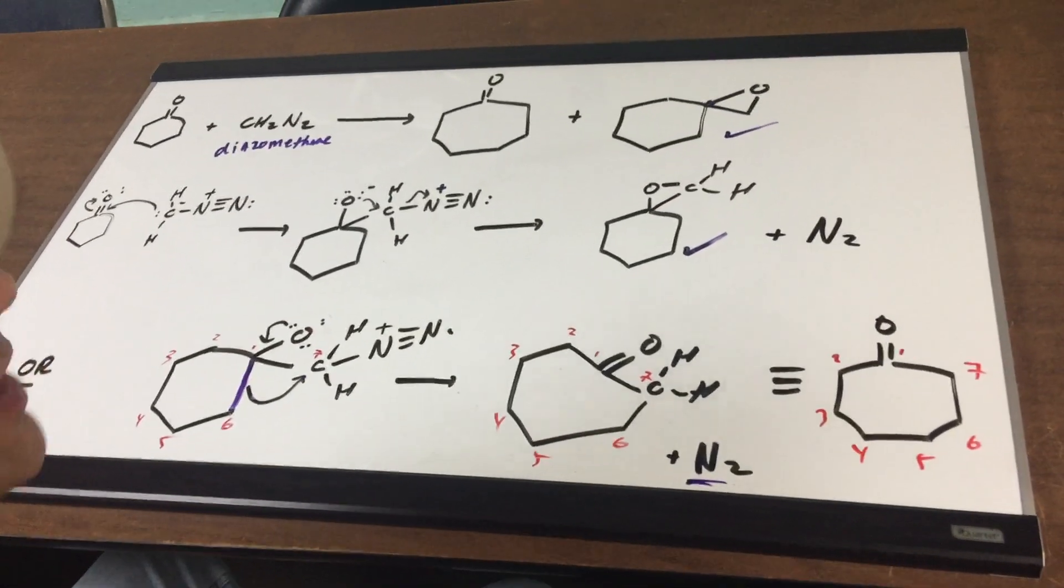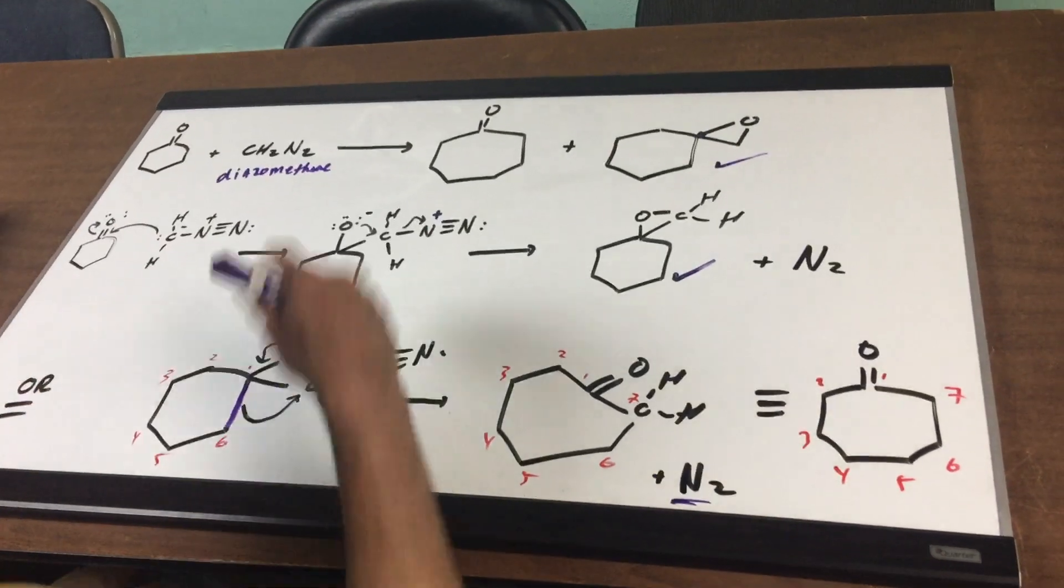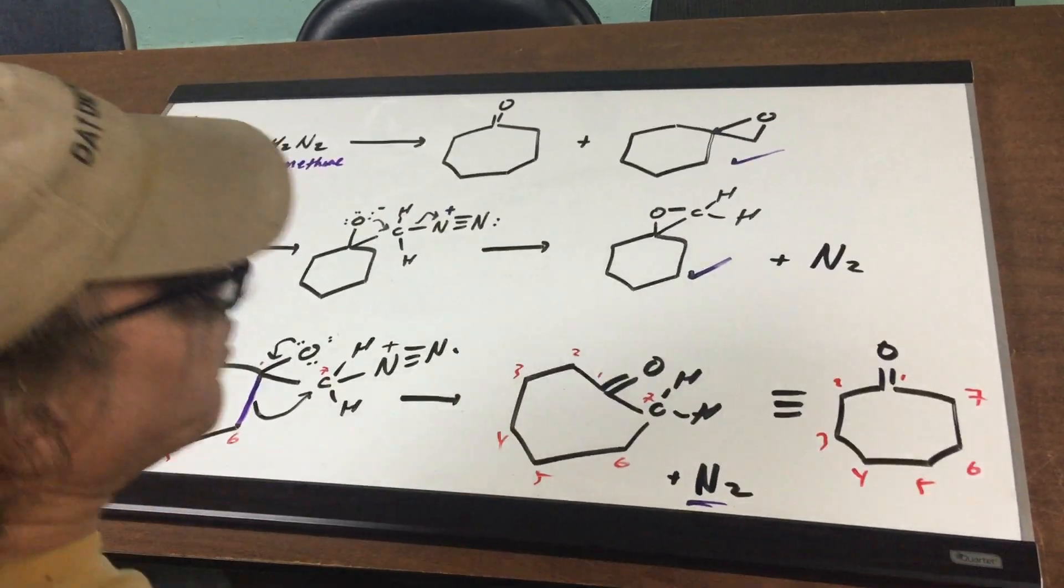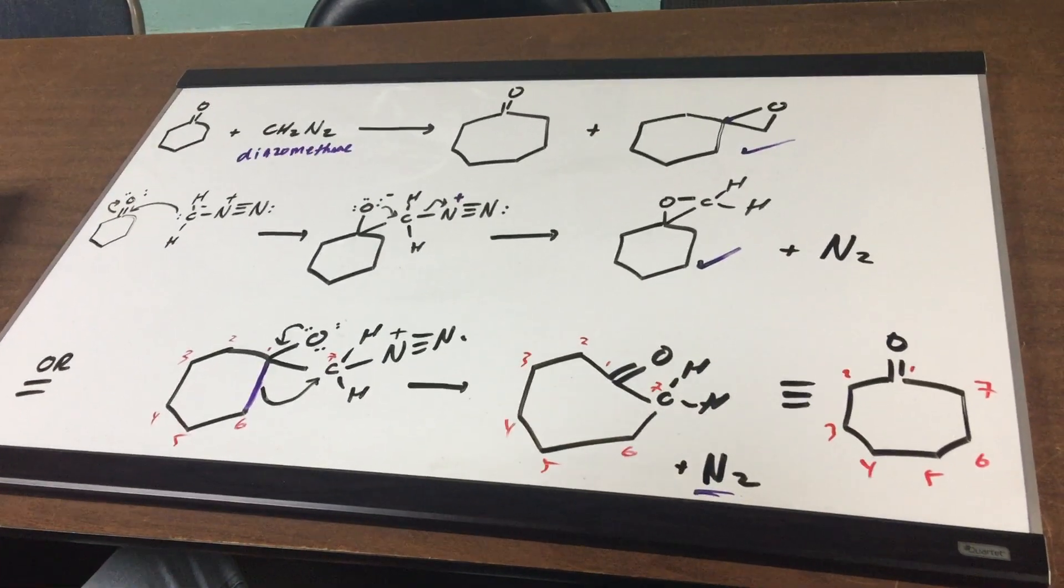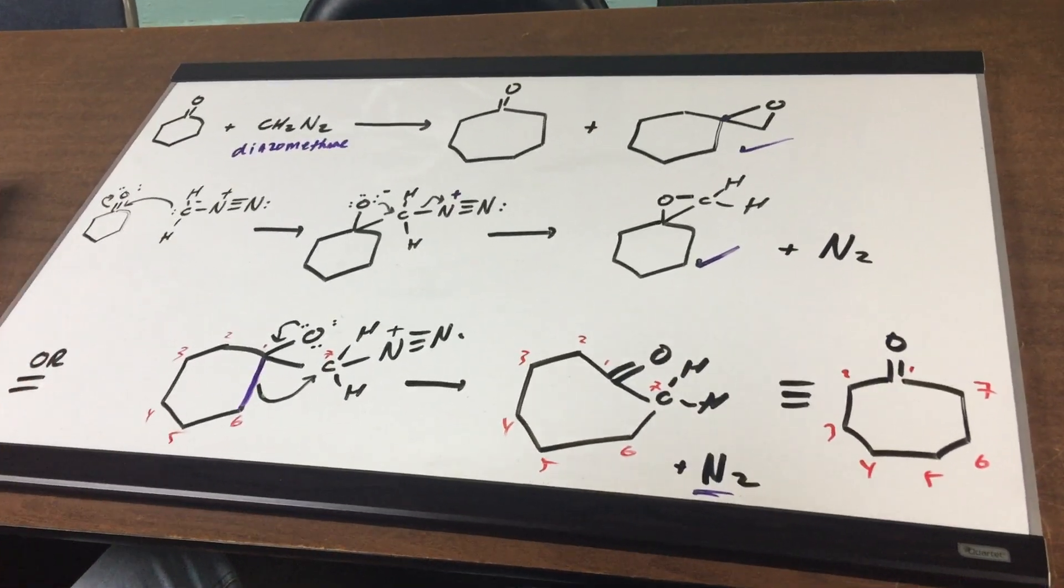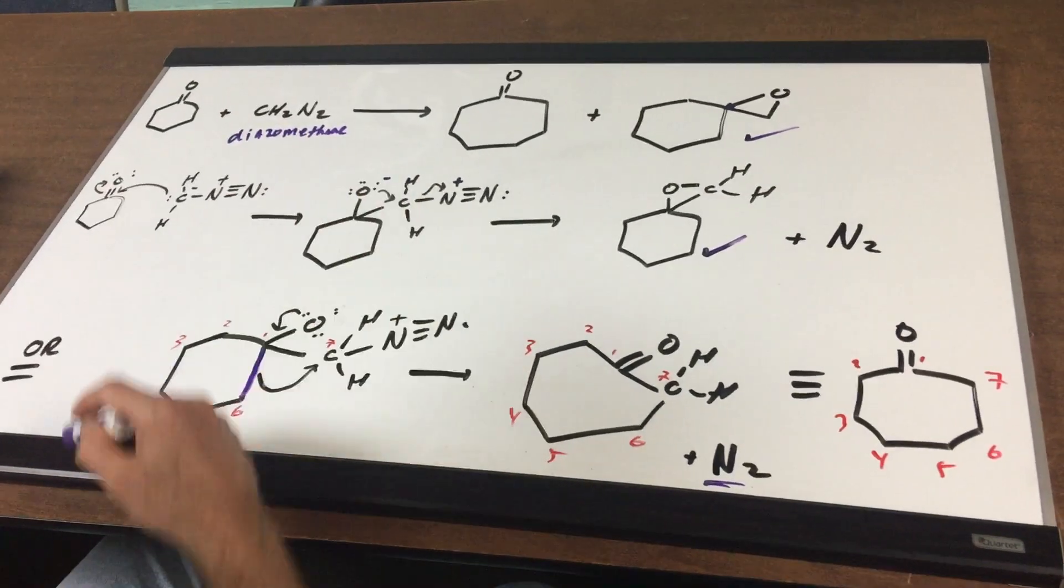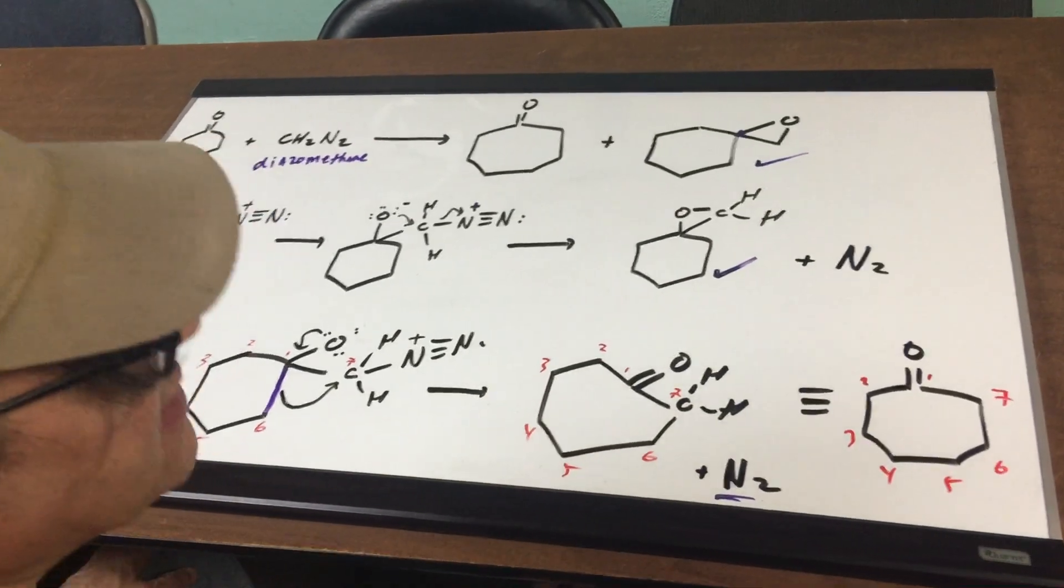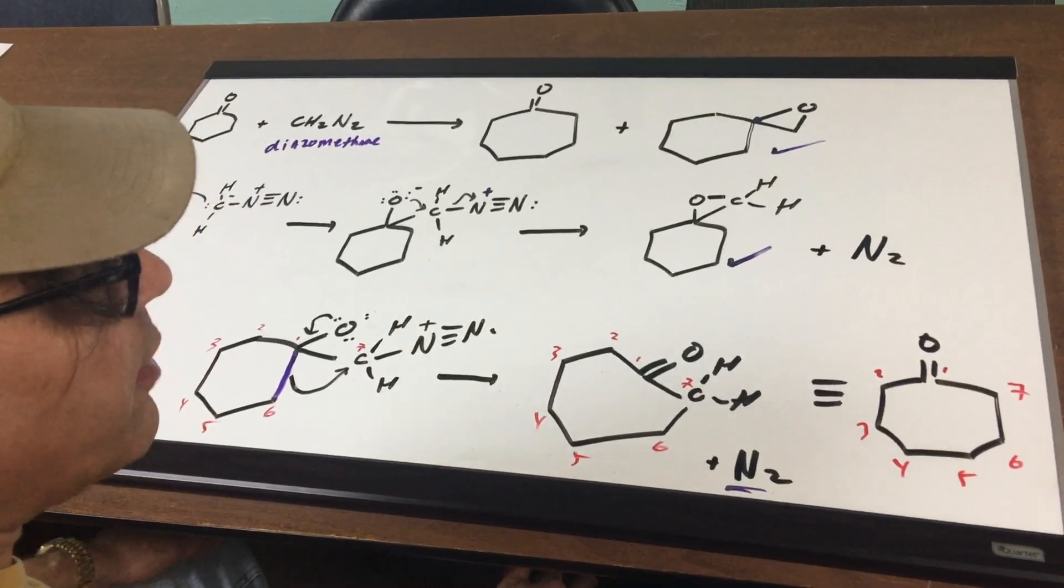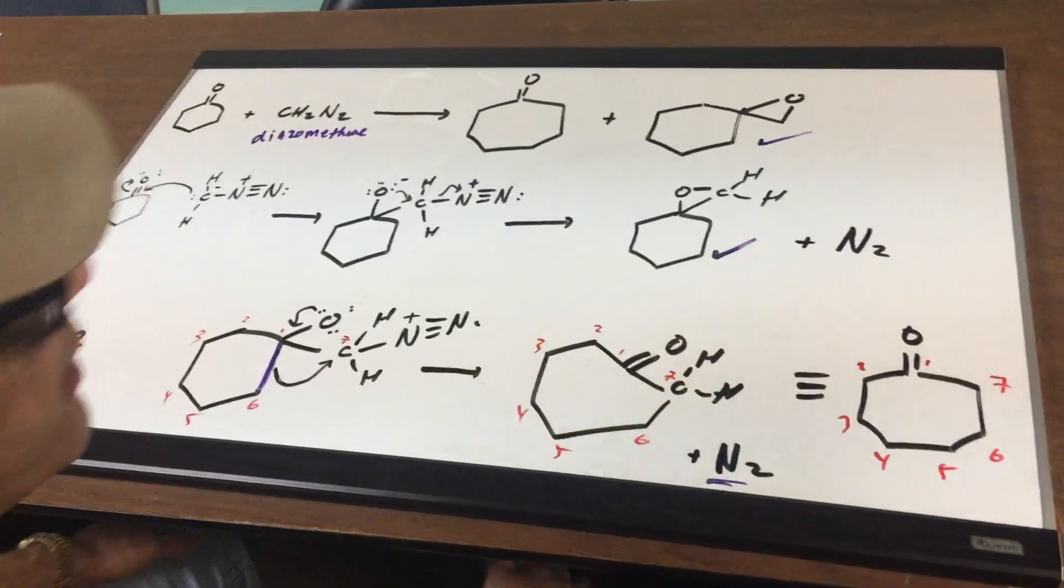So as you can see, there's two possible products. And depending on the experimental conditions, we could get one as the major and one as the minor. But what I want you to focus on, the nitrogen was a great leaving group. And we did some intramolecular attacking. And here we did a nice ring expansion. All right, I hope this helps and gives you some good information on how to write a reaction mechanism. I'll see you in study group.